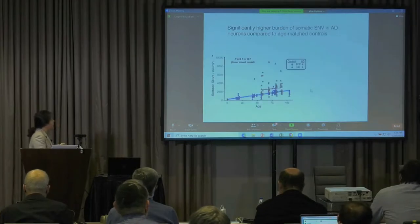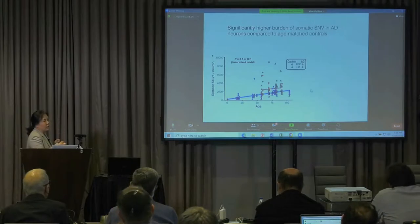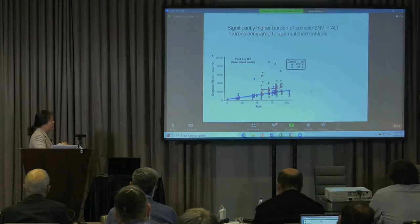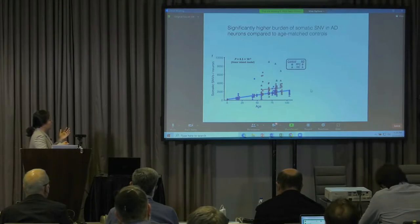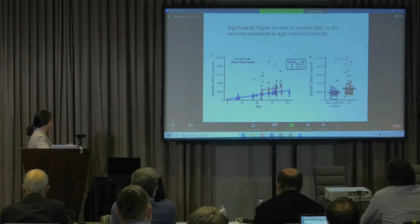Each dot in this figure represents one neuron. We measured the burden of somatic single nucleotide variants — point mutations. In control brains, we observed an age-associated increase in burden of about 20 somatic mutations per year. In AD, we saw significantly higher mutation burden compared to age-matched control brains.